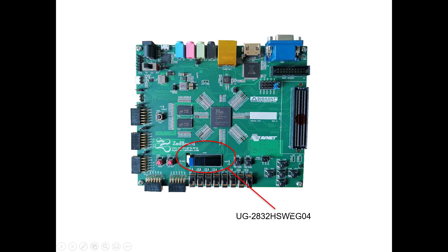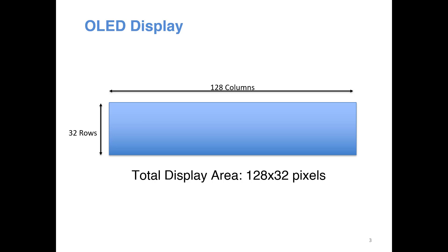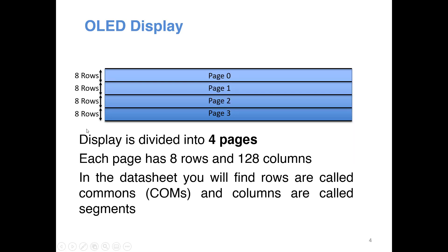This is the part number, so if you want to know more details about the display you can download the user guide for this particular OLED display and find all the details there. I'm just giving a brief overview. The OLED display on Z-port is a 128 by 32 display, meaning it has 128 columns and 32 rows, so the total number of pixels is 128 times 32.